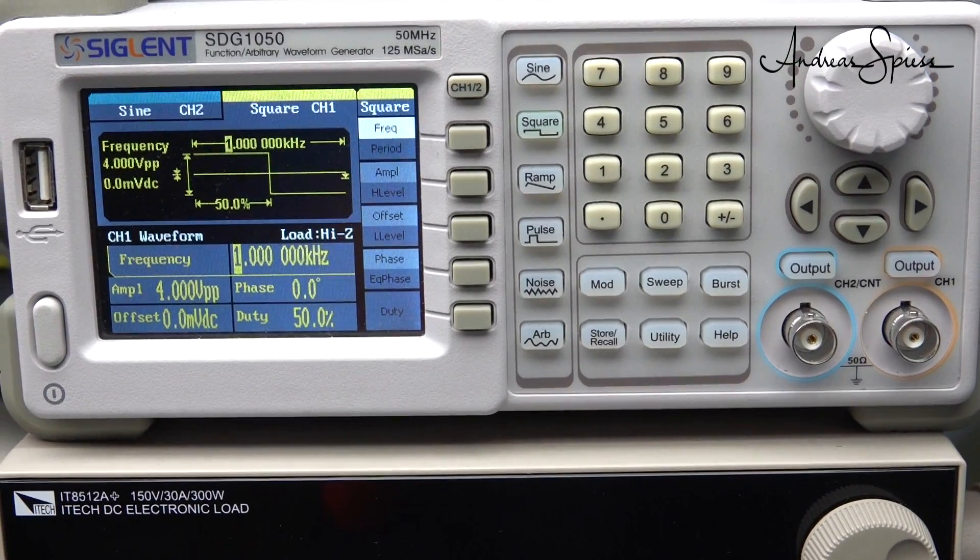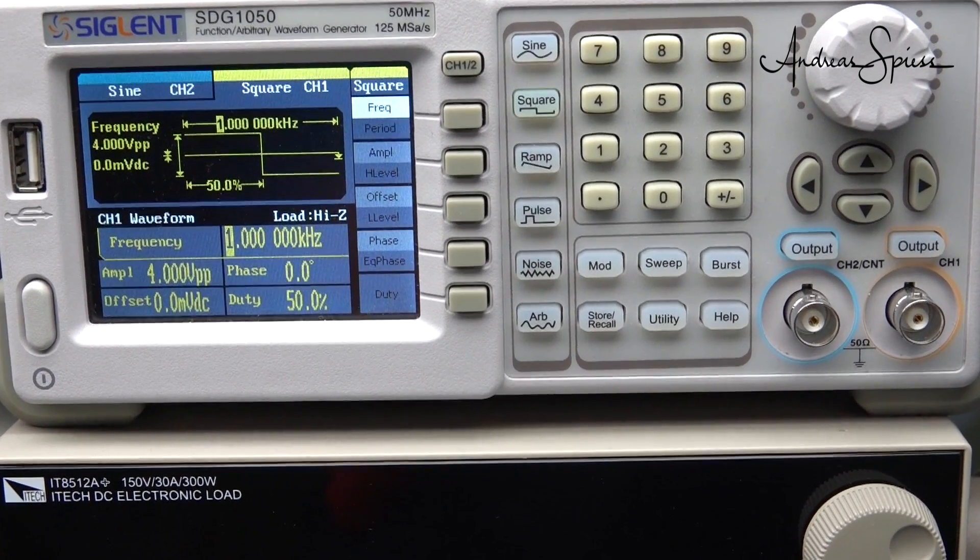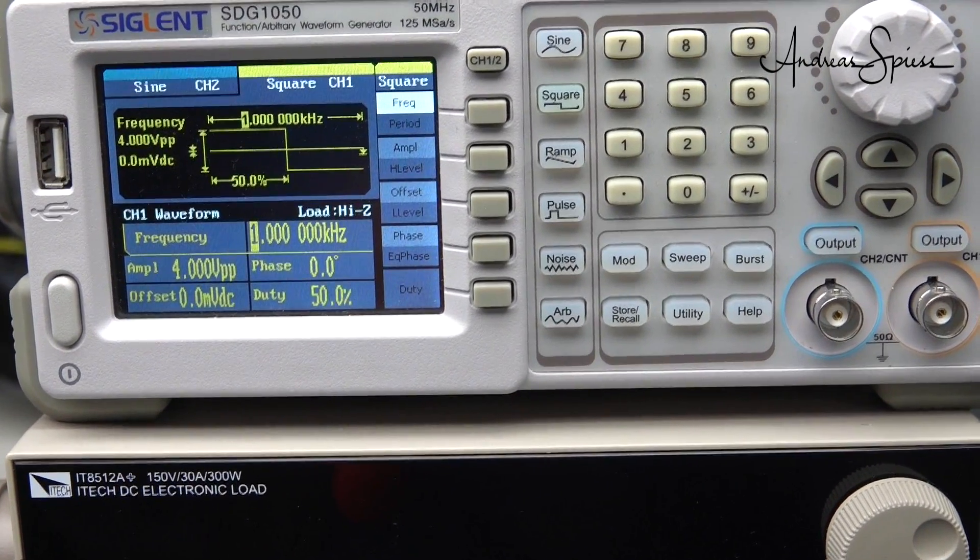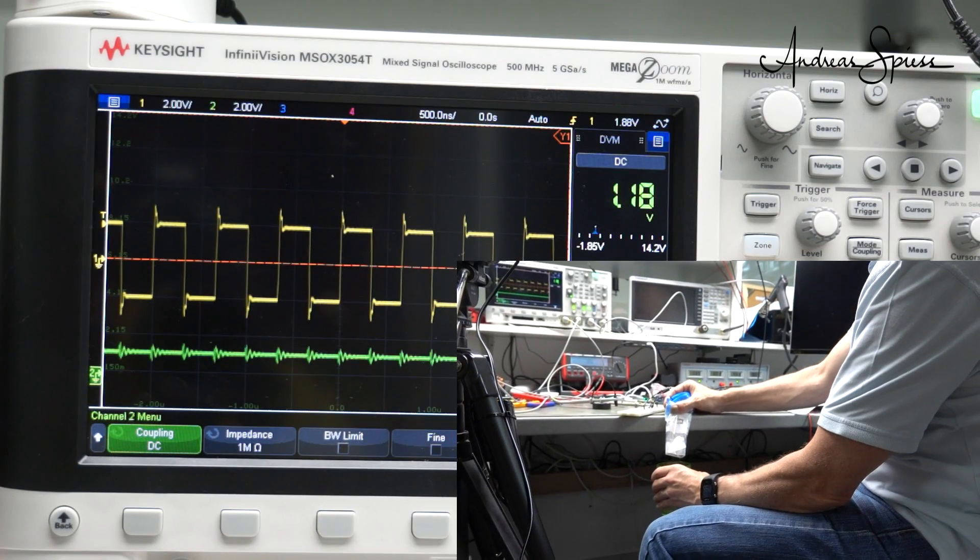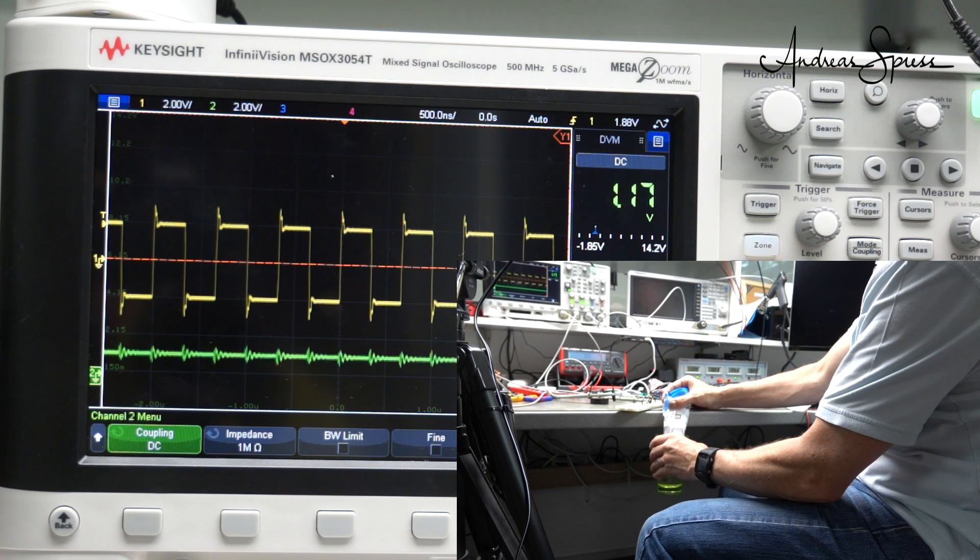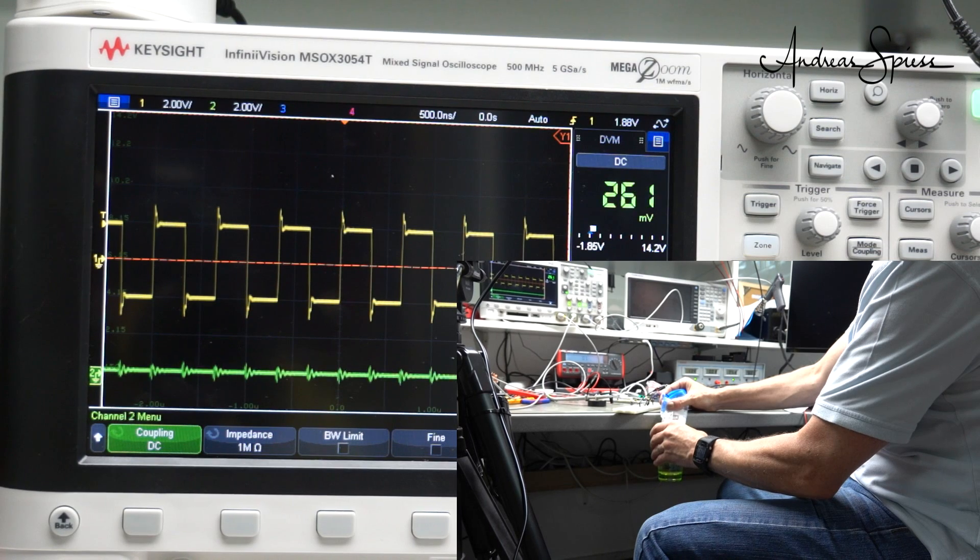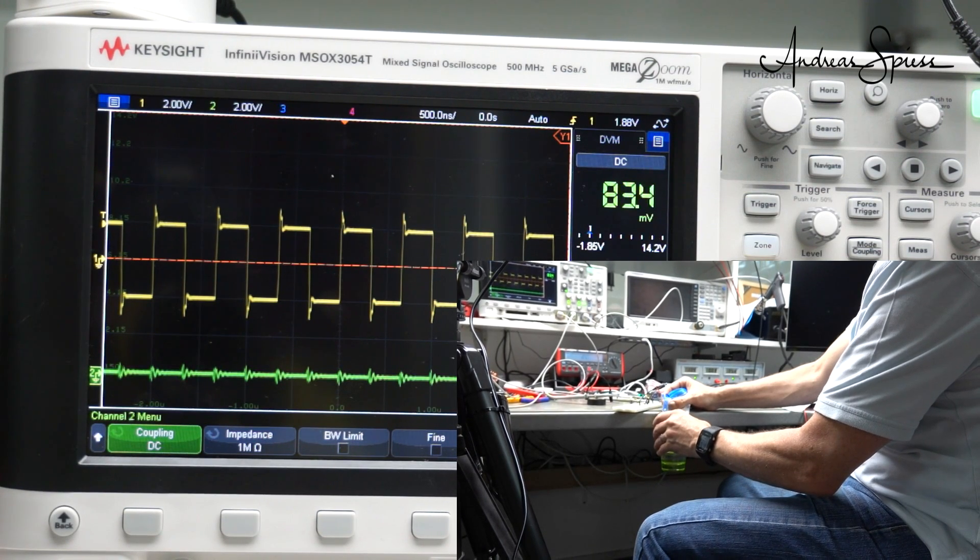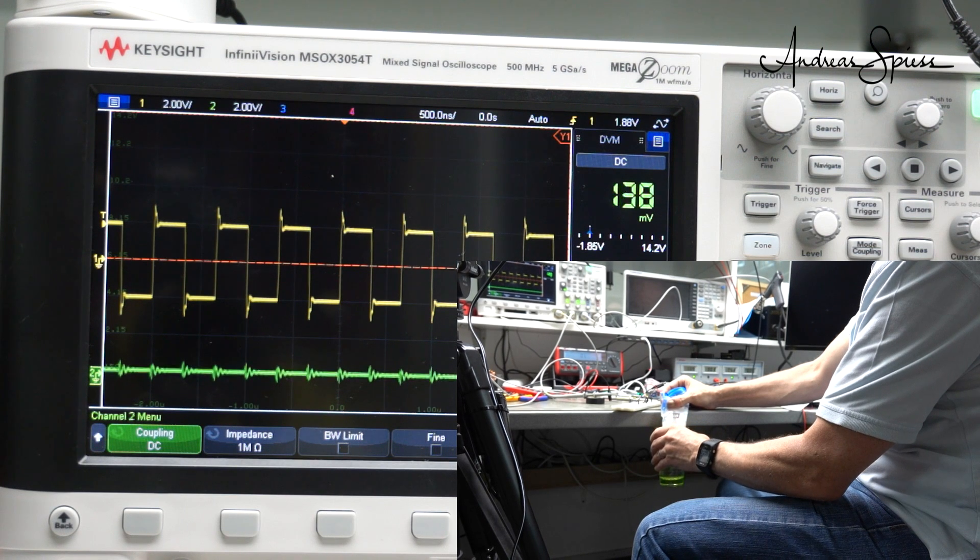And we need a square wave. Instead of an NE555, I use my waveform generator. Like that, I also can change the frequency. On channel 1 of the oscilloscope, you see the square wave, and on channel 2, the output of the sensor. And really, if I dip my sensor into the water, the output value changes. Now you can believe me.